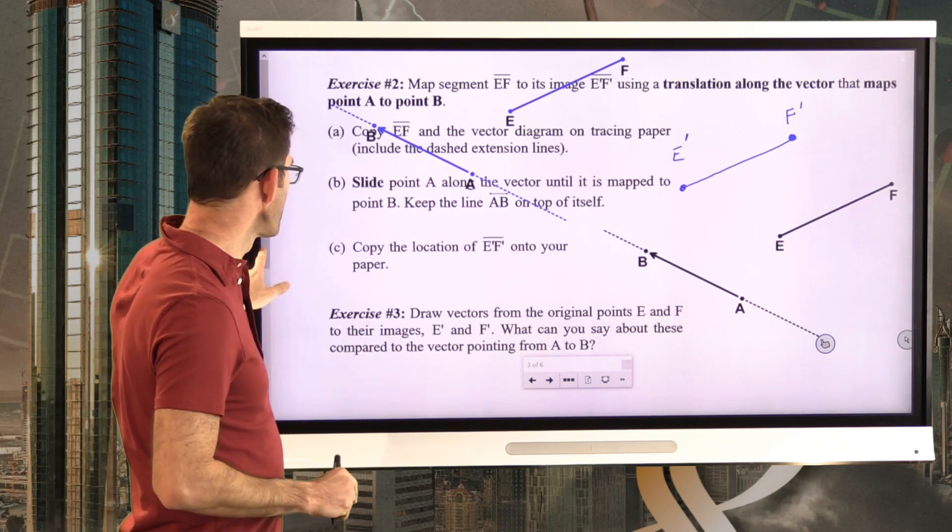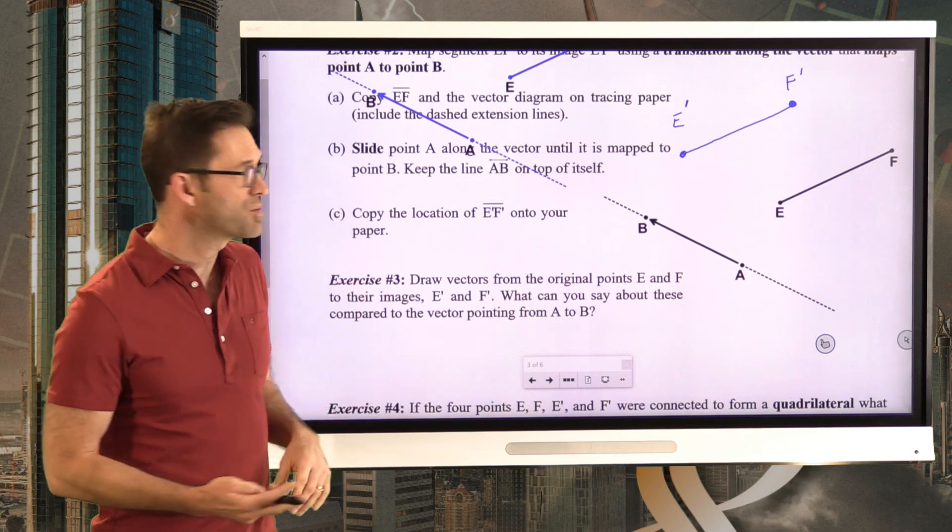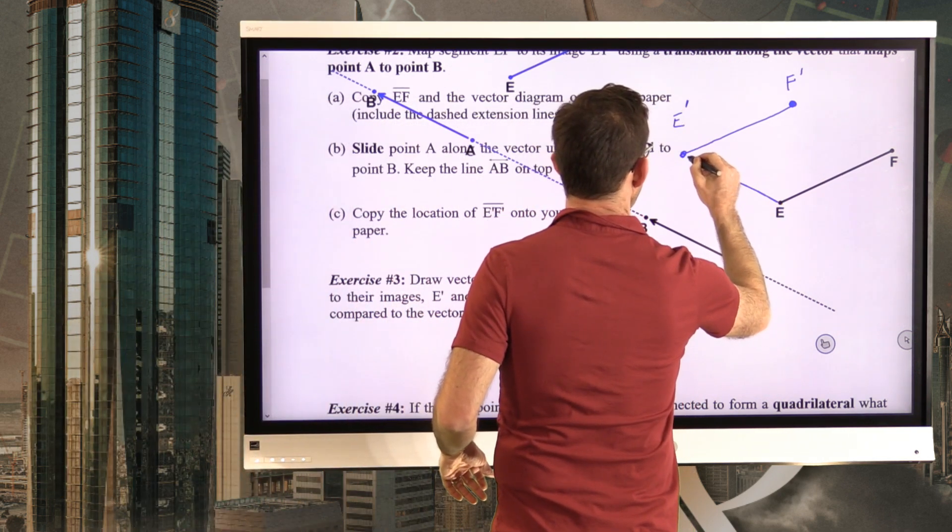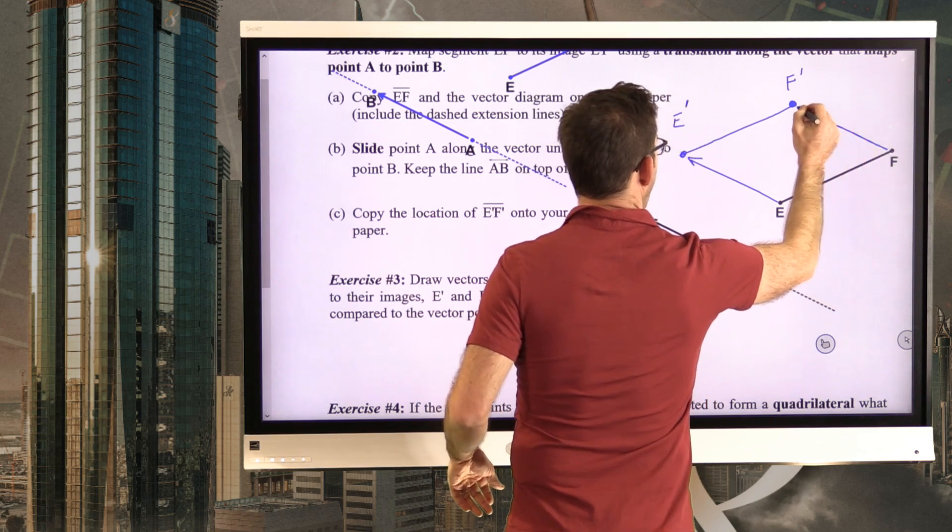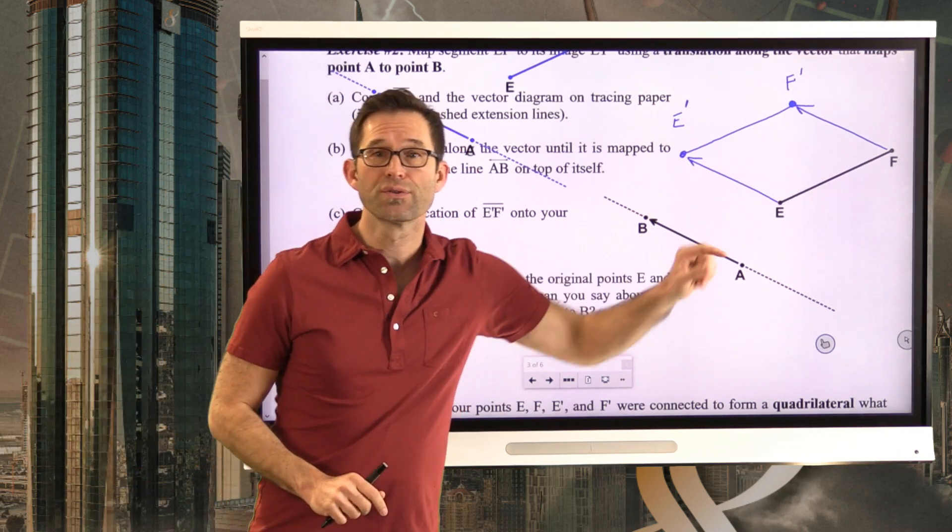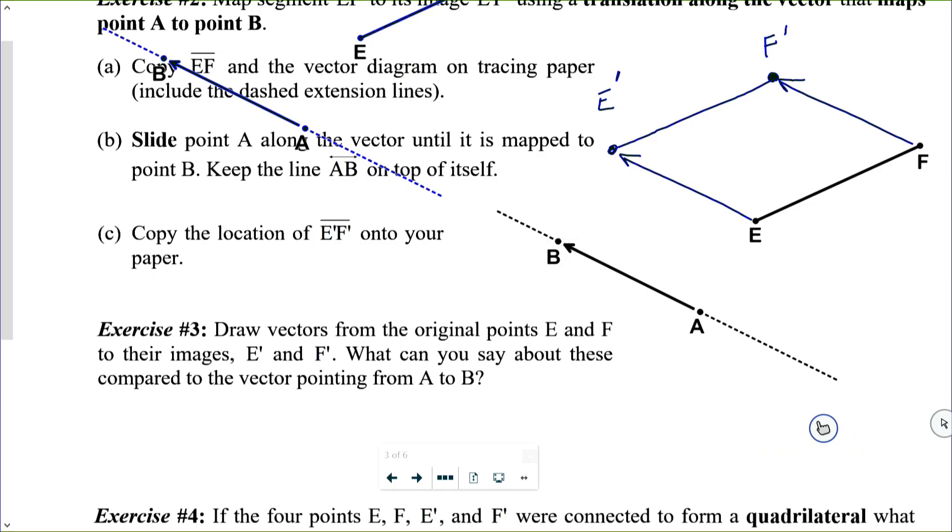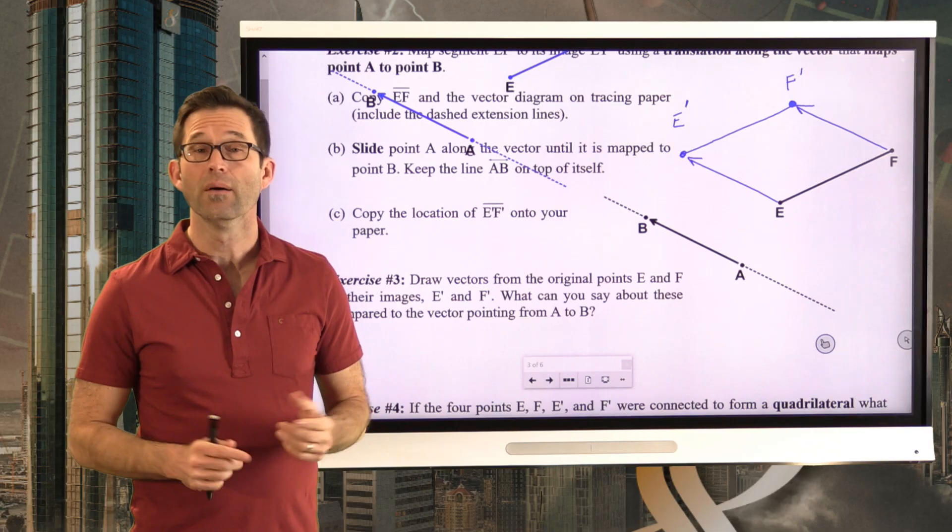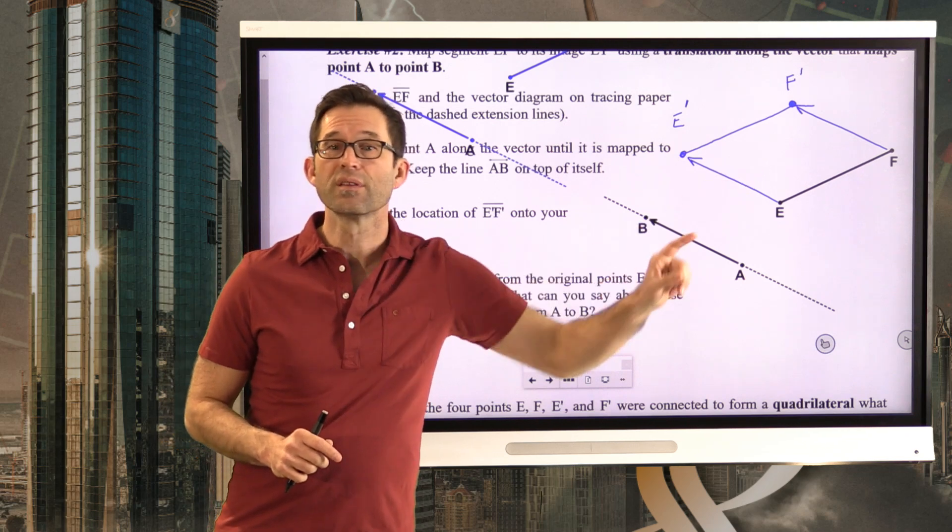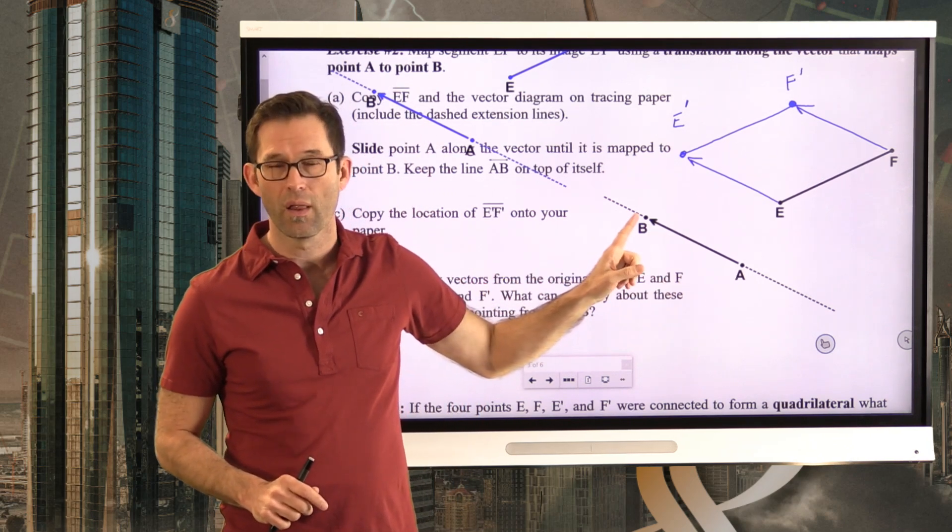Exercise number three. Exercise three asks us to draw vectors from the original points E and F to their images E prime F prime. What can you say about these compared to the vector pointing from A to B? So in other words, I just want to do this. I really should again do it with a straight edge, but I am just going to draw those vectors in. Now, what can I say about these two vectors compared to this vector? Well, I can say two things. What do you think they are? Pause the video now. Well, one thing we can say about these two vectors is that they're the same length as vector AB. And the other thing we can say about these two vectors is that they're also parallel to vector AB.